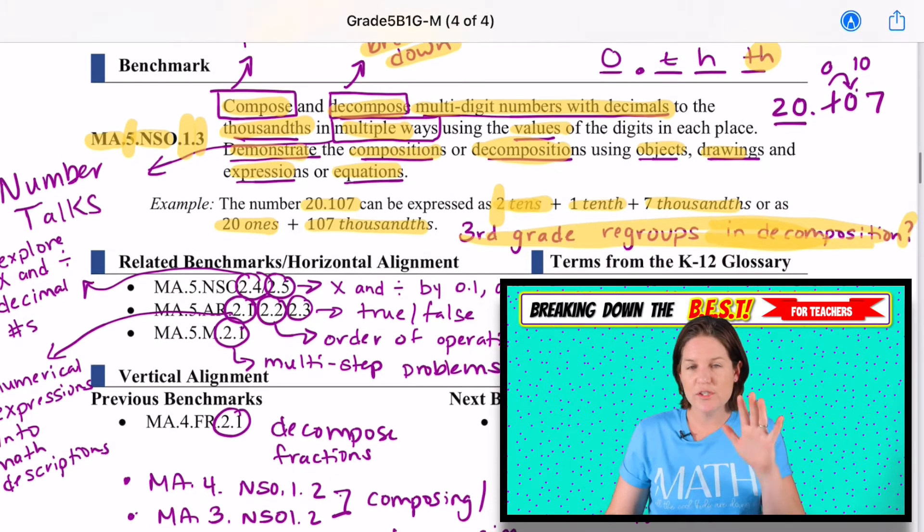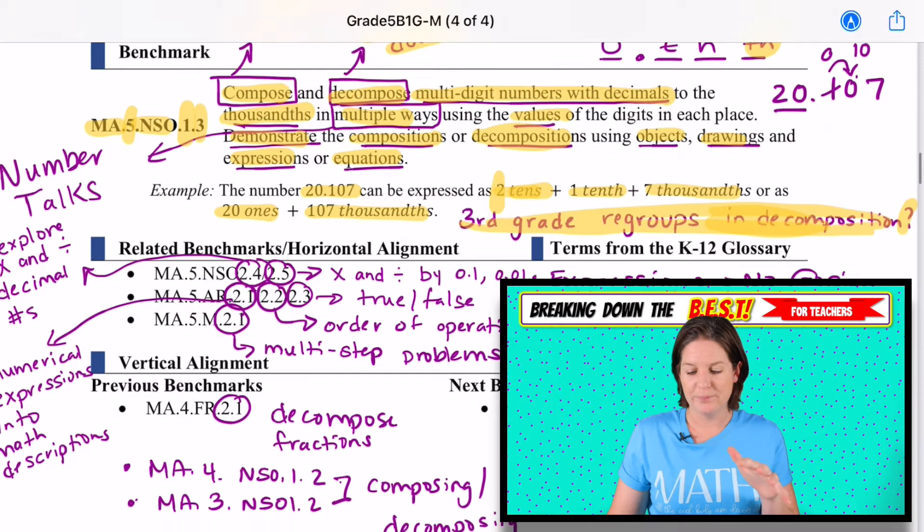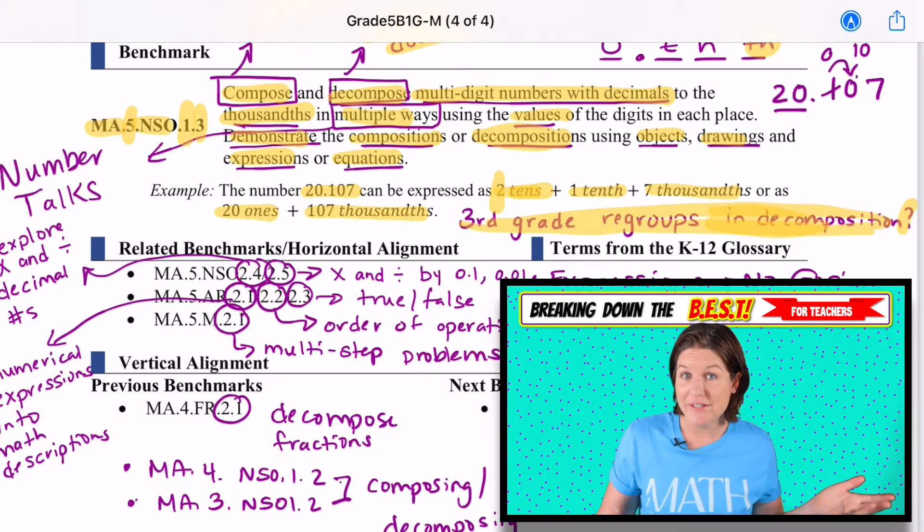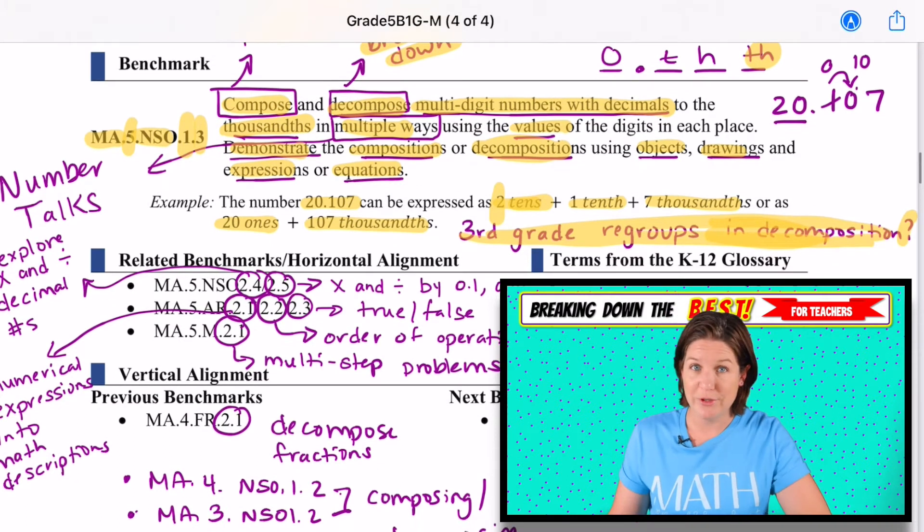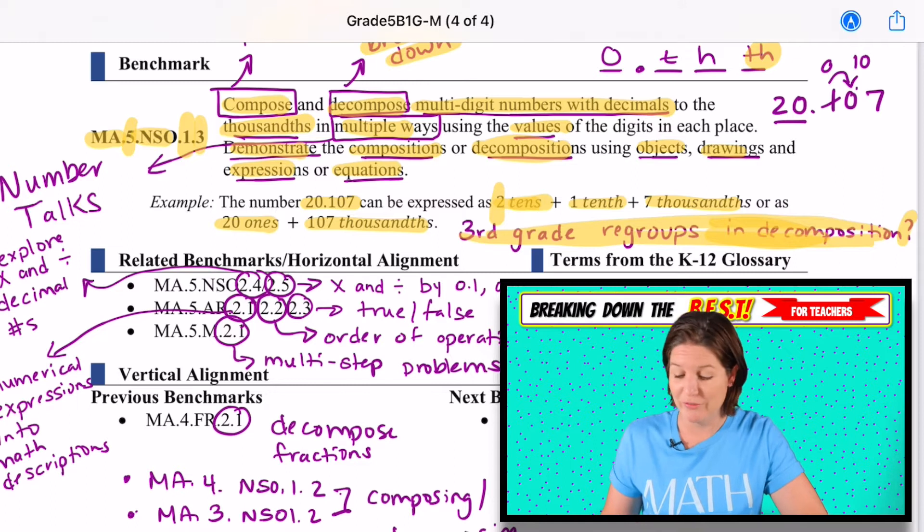So with this example that they gave us, 20 and 107 thousandths, we could say that this could be 20 ones plus, and we could say instead regroup this over and make it 10 hundredths plus seven ones. Third grade has to regroup. Why? Because it's explaining, it's helping them to understand what's happening when we're adding and subtracting with regrouping. But I'm just not seeing evidence of the regrouping with decomposition in fifth grade. I guess what I'm trying to say is just be on the lookout.